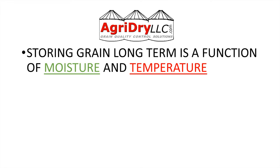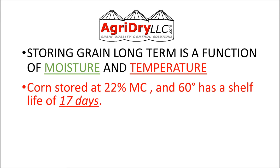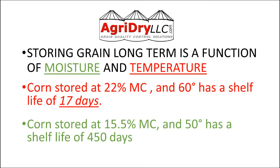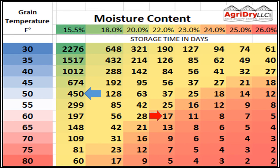Why do we worry about all this? Shelf life. If we look at both our moisture and our temperature, that determines the grain's shelf life. For example, corn stored at 22% moisture at 60 degrees has a shelf life of only 17 days. At 15.5% moisture and 50 degrees, it's 450 days. That's why we manage moisture and temperature — we want to store grain as long as we can and keep it in the condition we want it to be in.